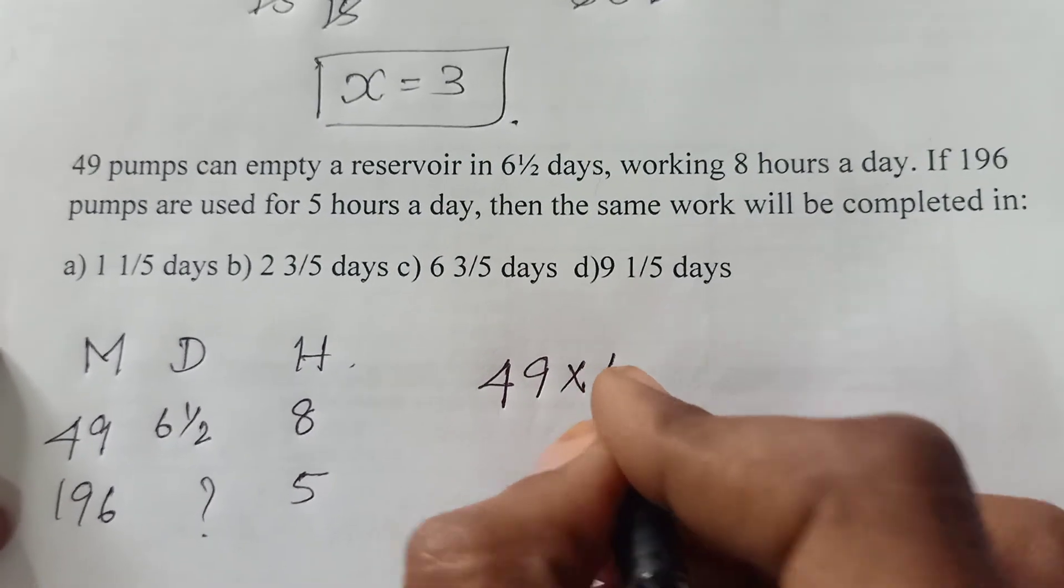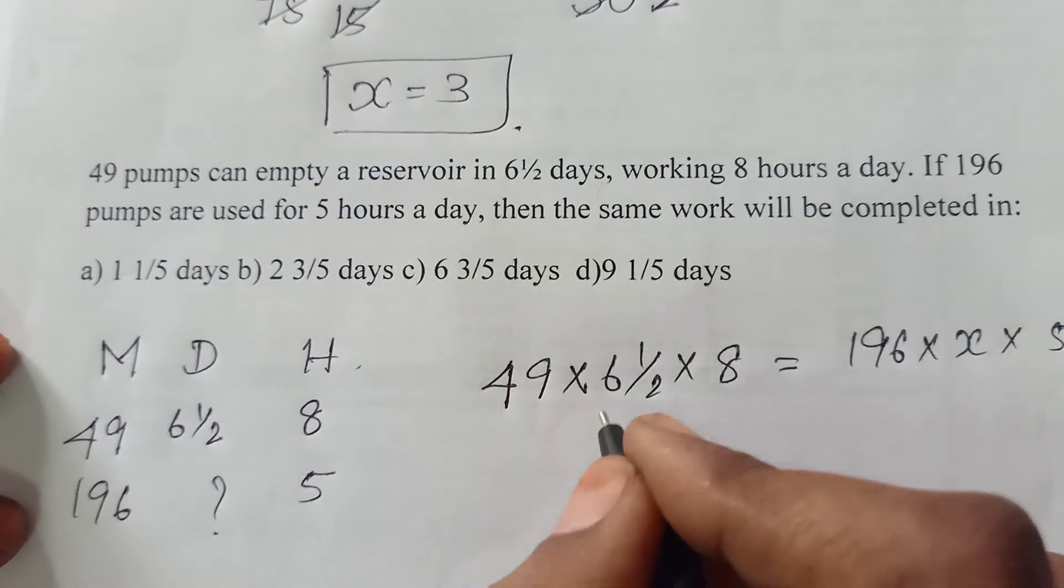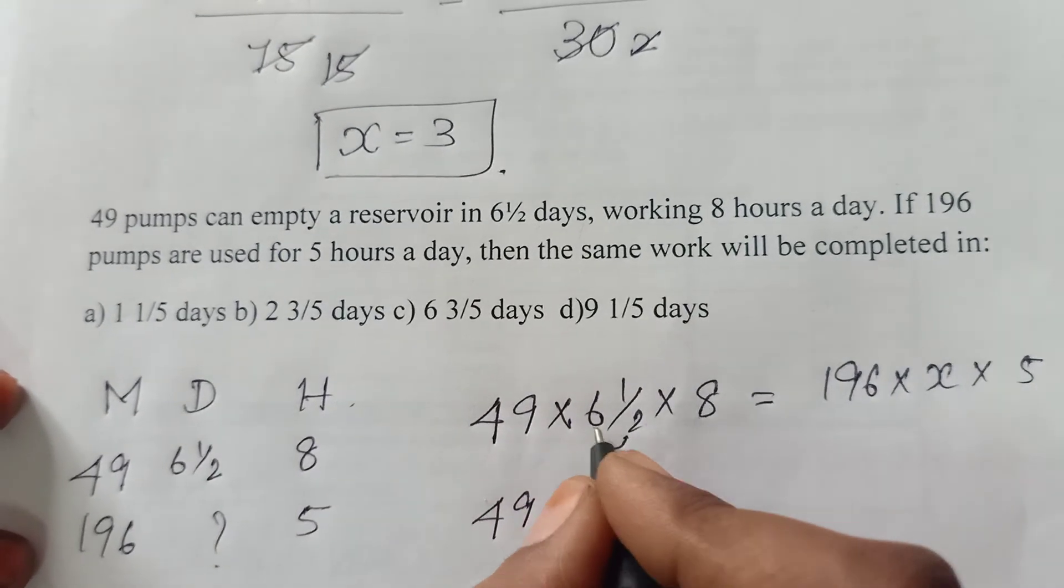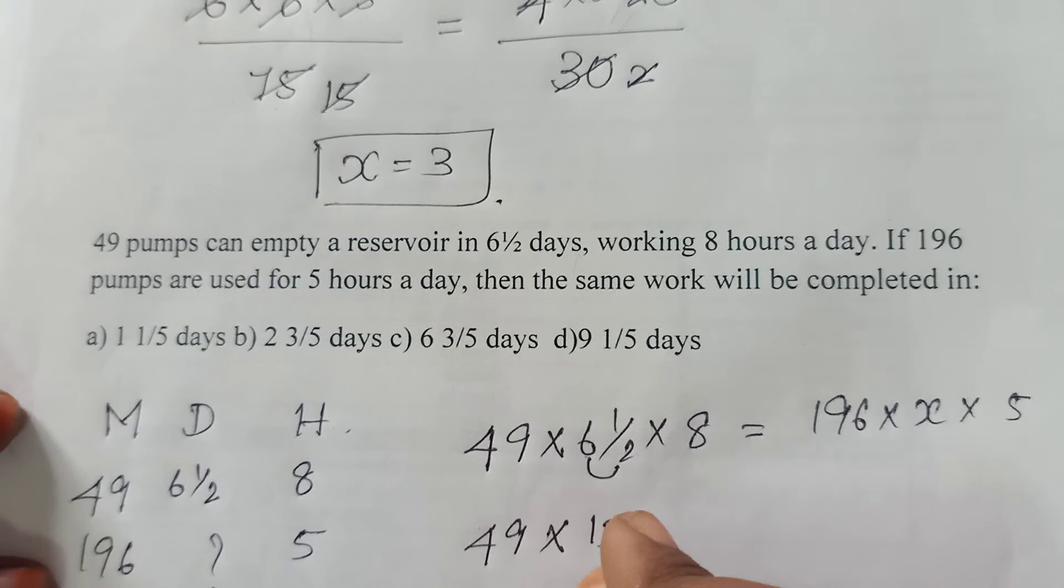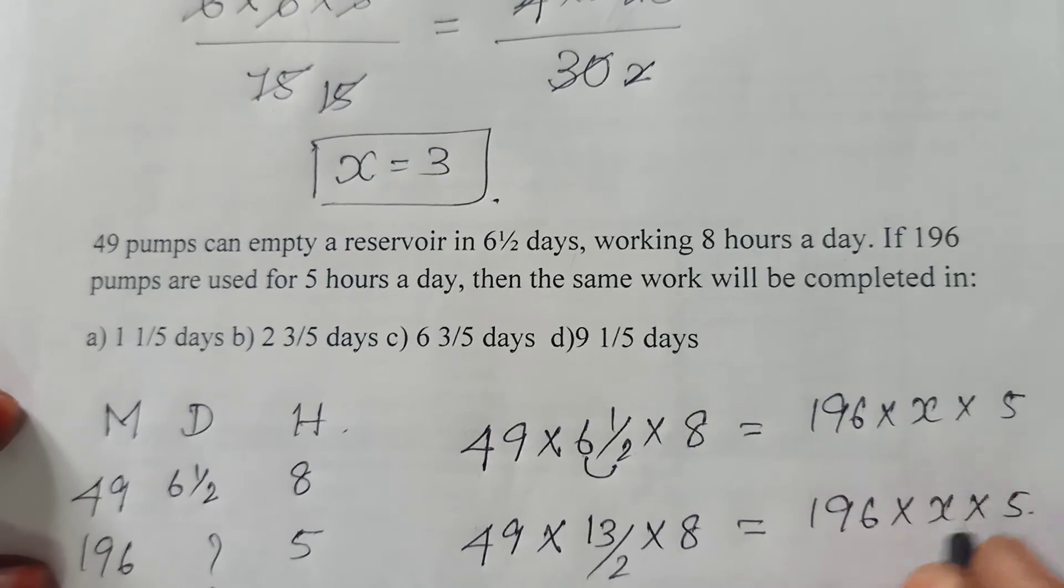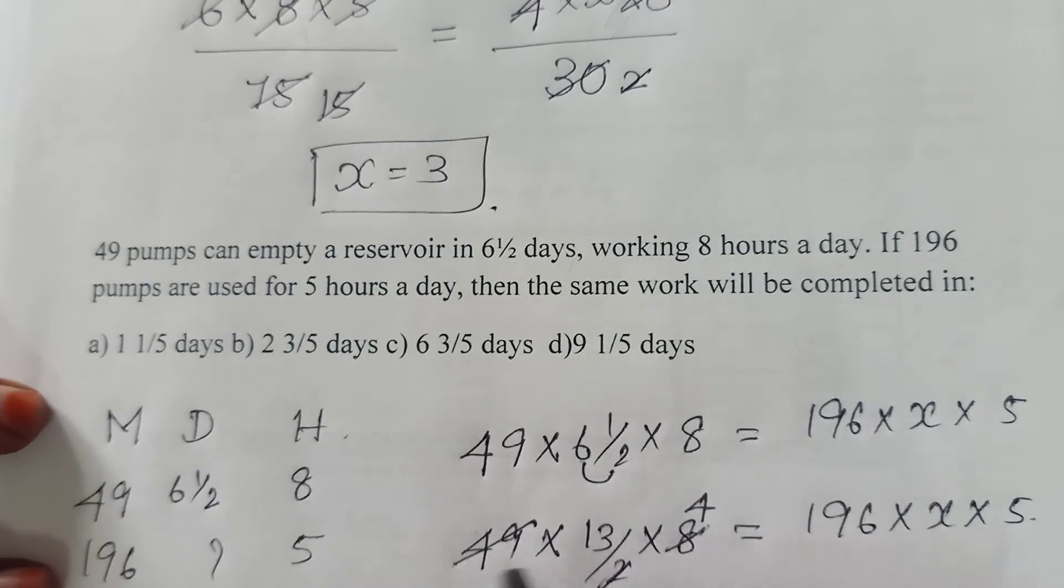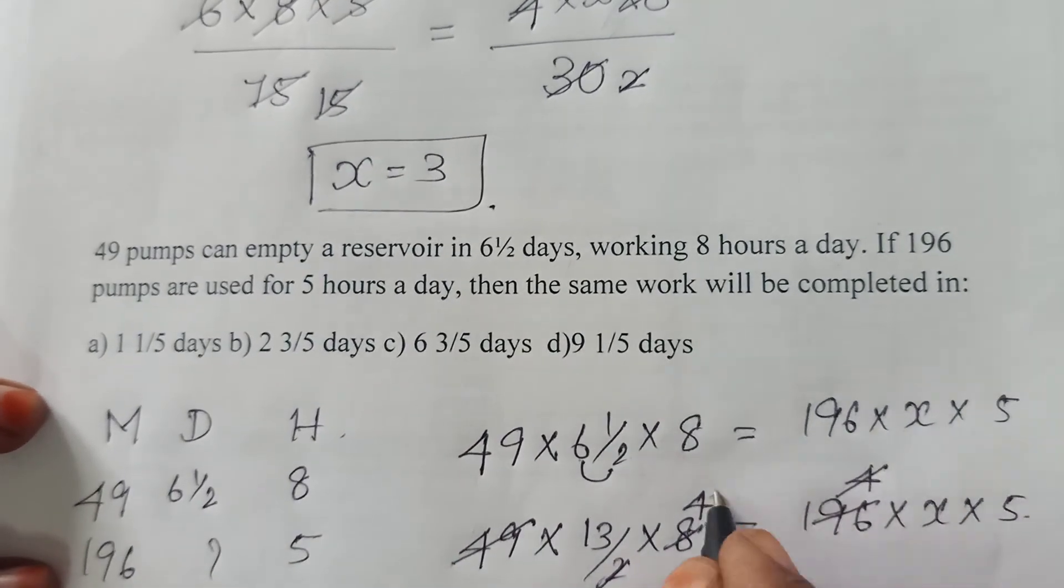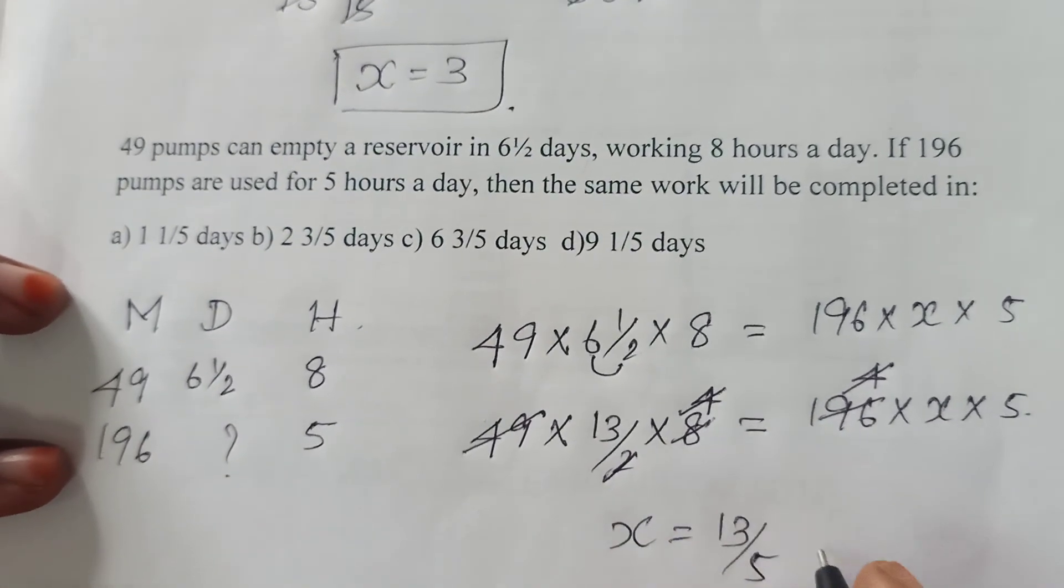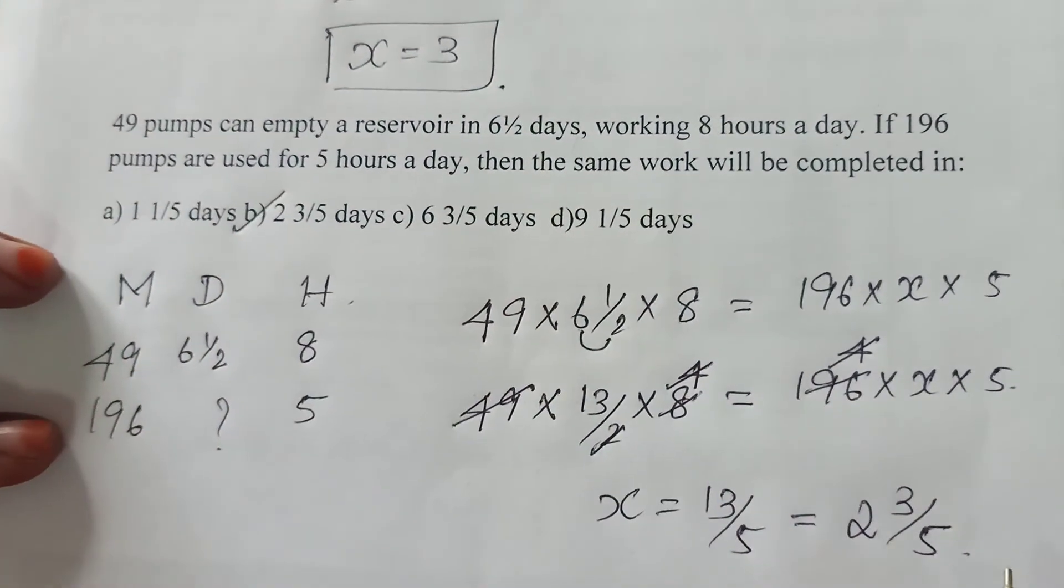So just substitute it. 49 into 6 and a half into 8 equal to 196 into x into 5. This 6 and a half will be written in terms of improper fraction. First we will be multiplying this 2. 6 times 2 is 12, 12 plus 1 is 13. So 13 by 2 into 8 equal to 196 into x into 5. In 2 table, 8 is 4 times. In 49 table, this is 4 times. This 4 and 4 will get cancelled. So the value of x is 13 by 5, which is 2 and 3 by 5. So your answer is 2 and 3 by 5 days.